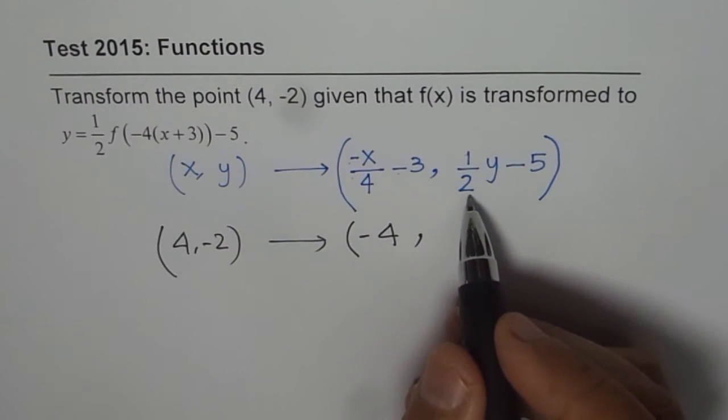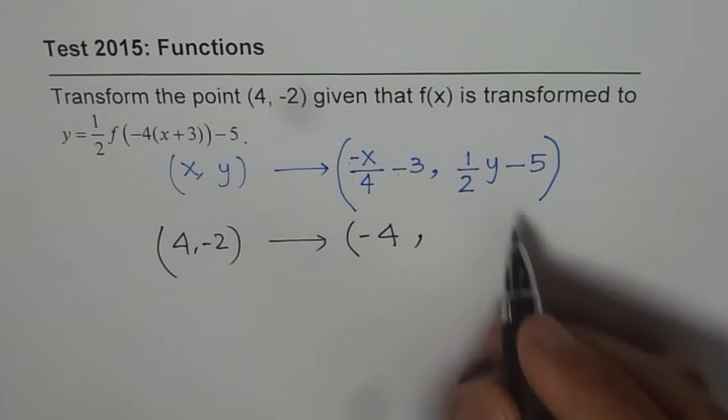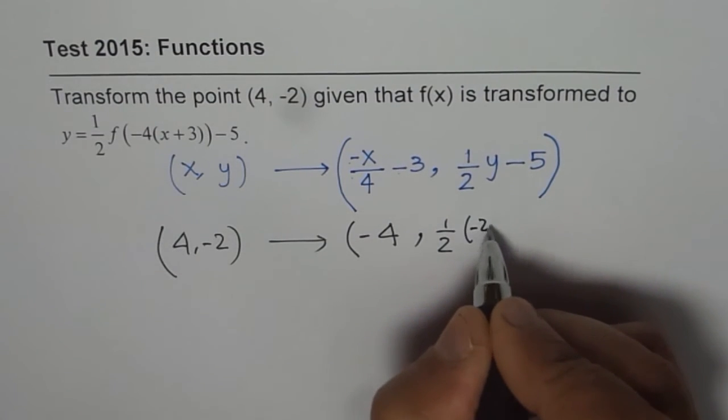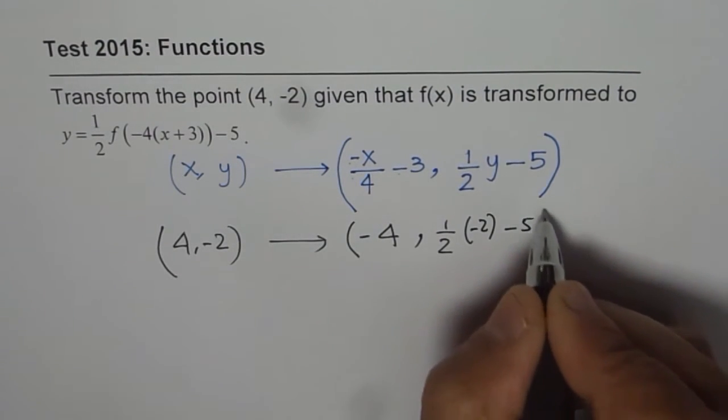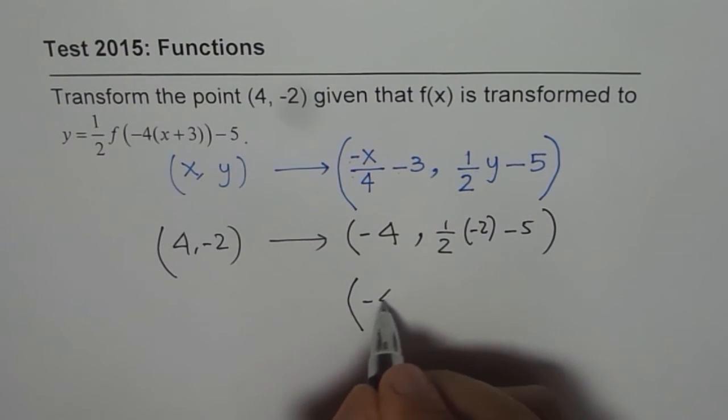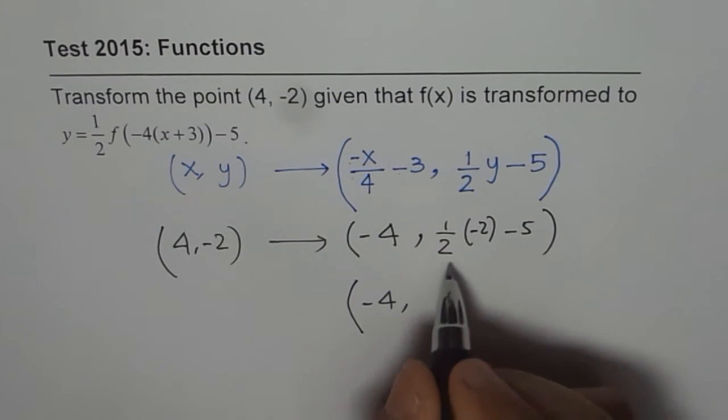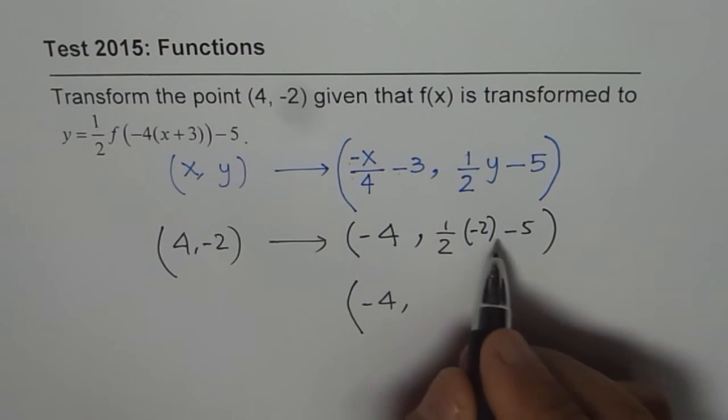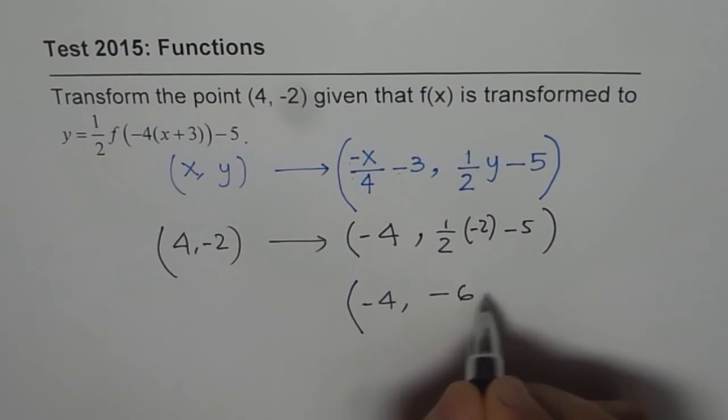And for this, half of minus 2, so let me show the work also. Half of minus 2 minus 5. That is how we should do it. So 2 divided by 2 with a minus sign will be minus, and minus 5 gives us minus 6.